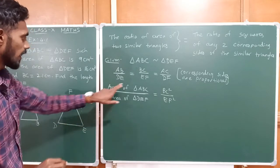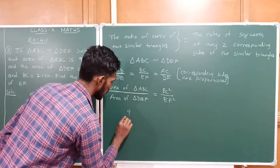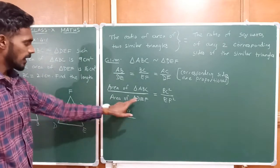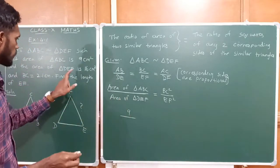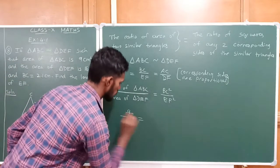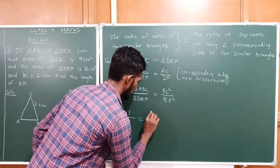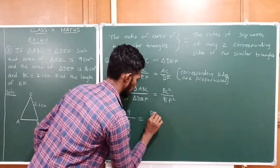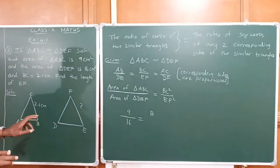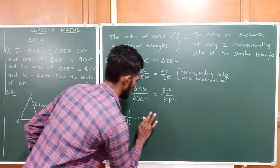Substituting the values: area of triangle ABC is 9 centimetre square, divided by area of triangle DEF which is 16 centimetre square. So it is 9 by 16, equal to BC squared — where BC is 2.1 centimetre — divided by EF squared.